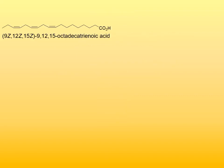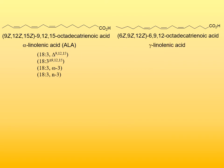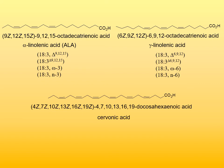Here are additional examples of fatty acid nomenclature as used in biochemistry. For each fatty acid, the line formula is given, followed by the IUPAC name, the common trivial name typically used in biochemistry, and various abbreviated designations. If you wish, you can pause the video here and examine these examples in more detail.